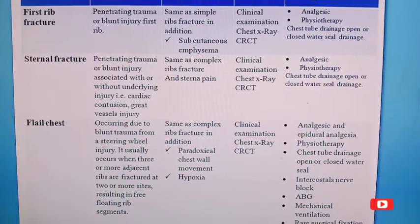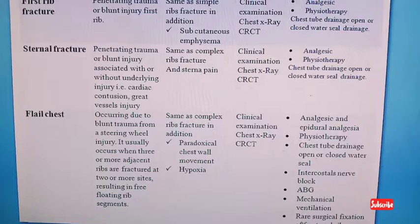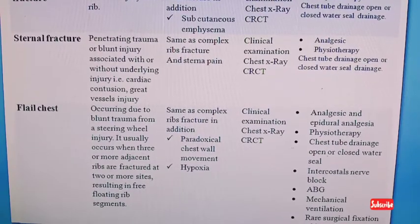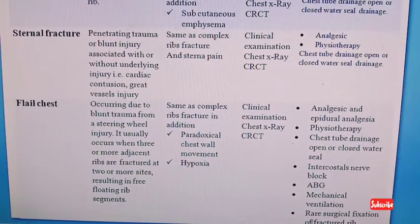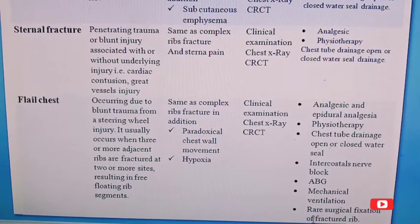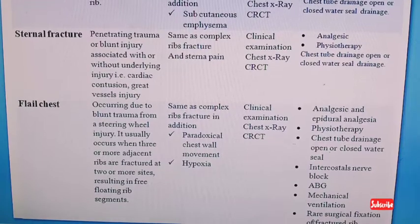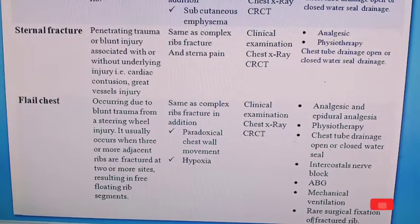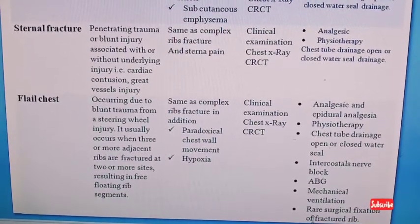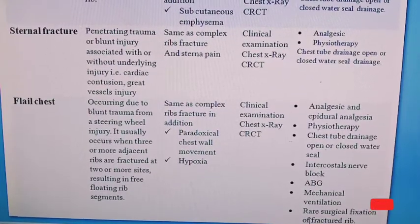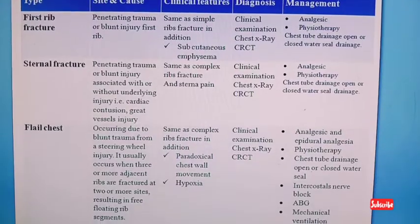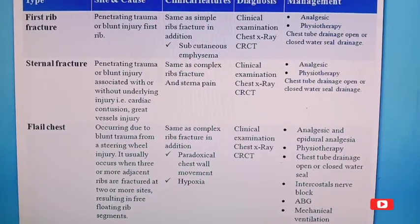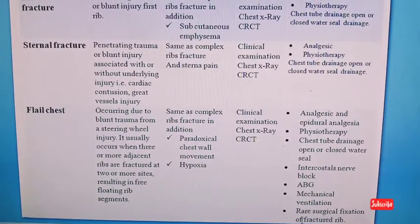Sternal fracture is caused by penetrating or blunt trauma, associated with or without underlying injuries such as cardiac contusion or great vessel injury. Clinical features are the same as complex rib fracture plus sternal pain. Diagnosis includes history taking, physical assessment, chest X-ray, and CT scan. Management is the same as first rib fracture: pain management, physiotherapy, and open or closed water seal drainage.